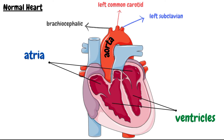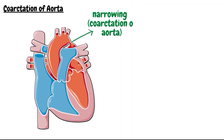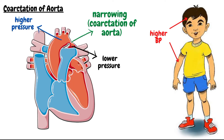For the blood to flow normally, the aorta should be nice and patent. But in the coarctation of aorta, there is narrowing of a segment of aorta distal to these branches and near the insertion of ductus arteriosus. This causes increased pressure proximal to the defect, leading to high blood pressure in the head and upper extremities, and decreased pressure distal to the obstruction, leading to lower blood pressure in the body and lower extremities.